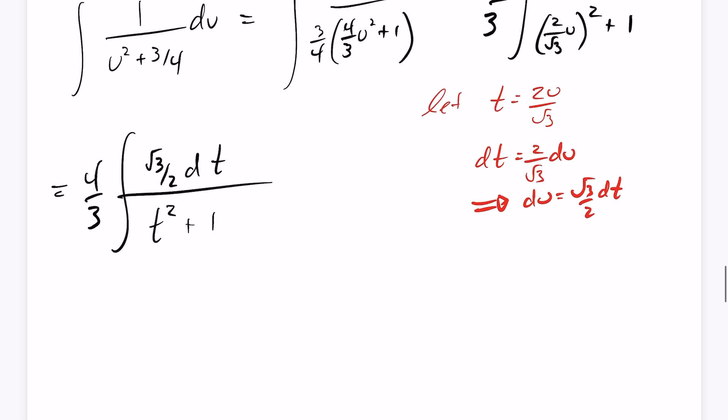So now we can finally apply our derivative here. So this is going to end up becoming, we'll clean this up later, but this will be 4 root 3 over 6, the integral of dt over t squared plus 1. And as we just discussed, this will be 4 root 3 over 6 times the tan inverse of t, plus some constant k.